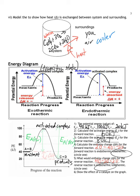The last step is to show what a catalyst does. A catalyst speeds up a reaction by lowering the activation energy. I'll show that on the graph by drawing the lowered activation energy for both the forward and the reverse reactions.